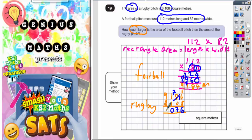And nine take away six is three. So the final answer is that when you find the difference between the football and the rugby pitches, you get 3,076 square meters.